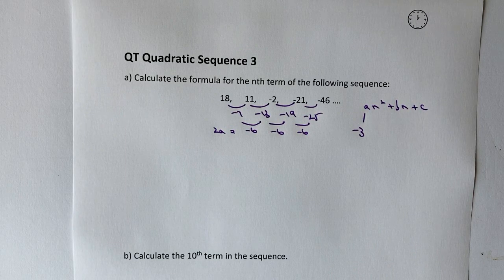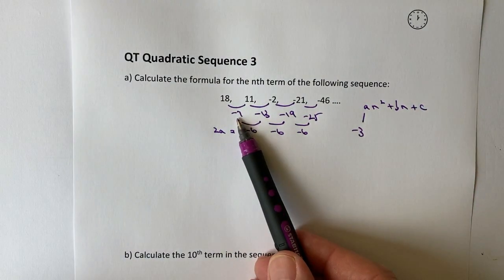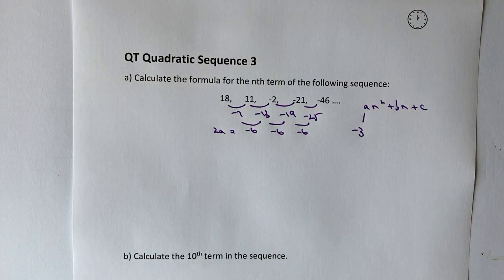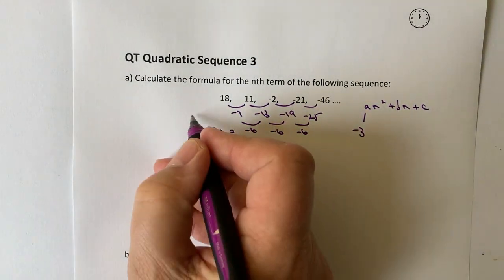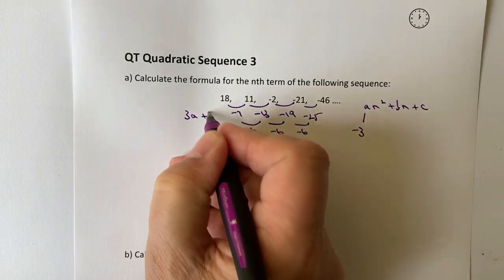The next bit of this is to say, well actually this number - and this is an equation that you need to remember - minus 7, this number is equivalent to 3a plus b.